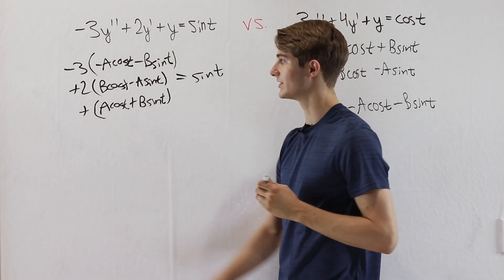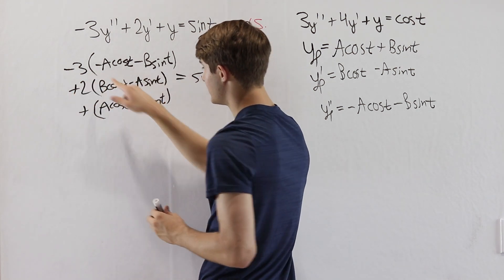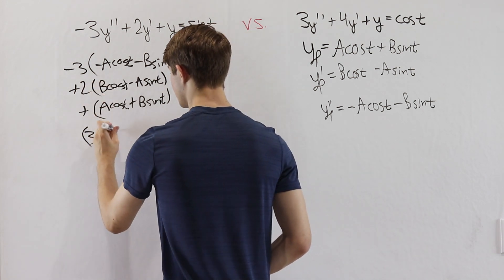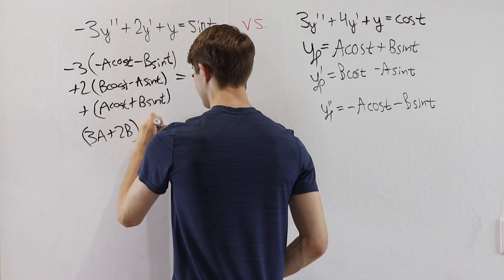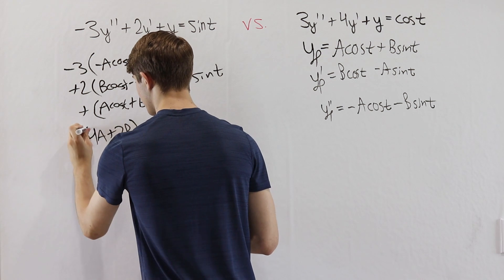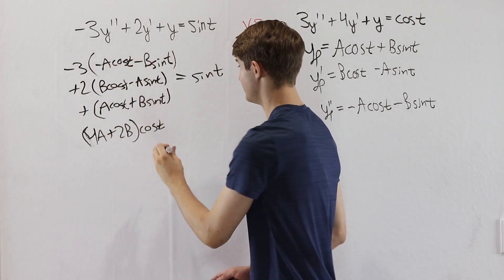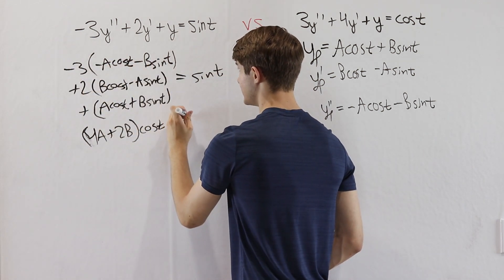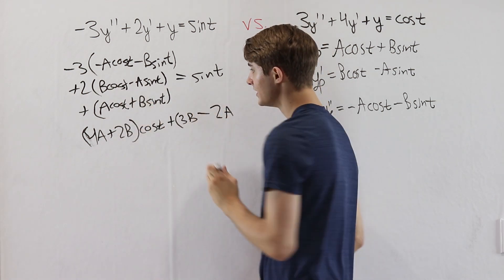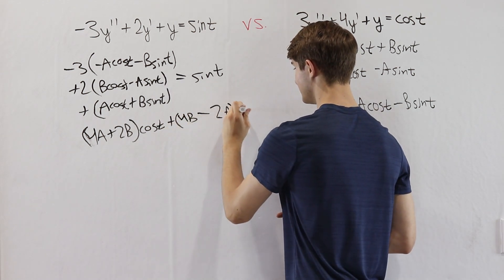Let's combine the like terms on the left side of this equation. Looking at the cosines first, notice we have minus 3 times negative a cosine t, that'll be 3a cosine t. And then we have plus 2b. And then finally we have another plus a, so that'll turn this from a 3 into a 4. So we have 4a plus 2b cosine t. Then looking at the sines, we have minus 3 times negative b, that'll be 3b. Then we have plus 2 times negative a, so minus 2a. And then finally plus b again, so that'll turn this 3 into another 4 times sine t.